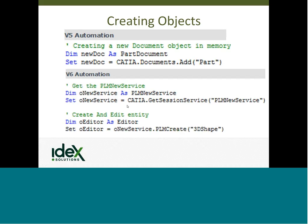Saving the object, although the syntax changes slightly, can still be done in a single line. In V5 we simply tell it to save the active document. In V6 we access the session service — the PLM Propagate Service — and give it the save method, which saves your data back to the database. Creating objects similarly: in V5 we use documents.add, while in V6 we first get the session service for the PLM New Service, then issue a PLM Create method. In this case, we're creating a 3D Shape — what we call a part in V6. This method and service returns the editor that has the part opened in it.